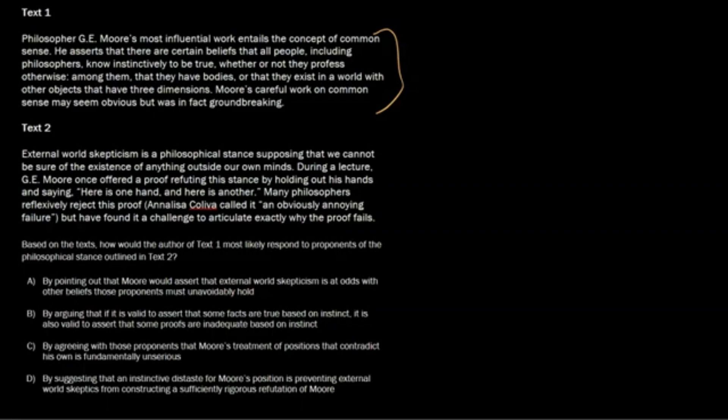Okay, so let's start off with answer choice A: by pointing out that Moore would assert that external world skepticism is at odds with other beliefs that these proponents must unavoidably hold. Okay, and this is how author 1 is responding to author 2. So author 2 is saying that external world skepticism is a philosophical stance supposing that we cannot be sure of the existence of anything outside of our own minds. Okay, and G.E. Moore, who is the guy up here, is offering a proof refuting this stance, refuting this stance. Okay, and I would say that this immediately is our answer.